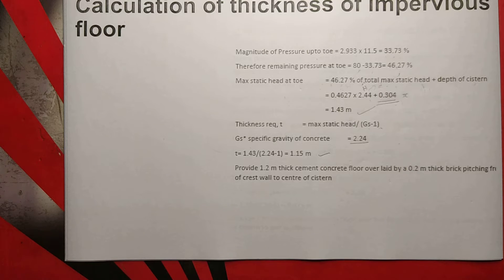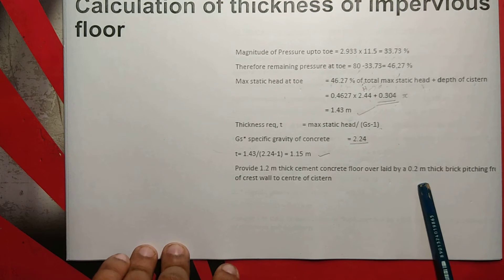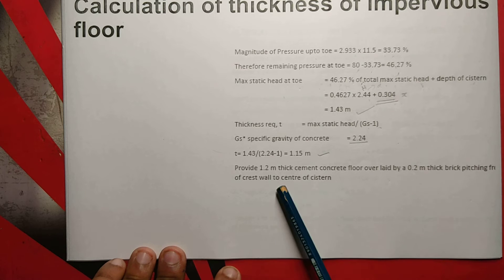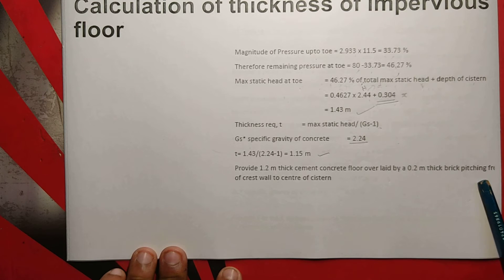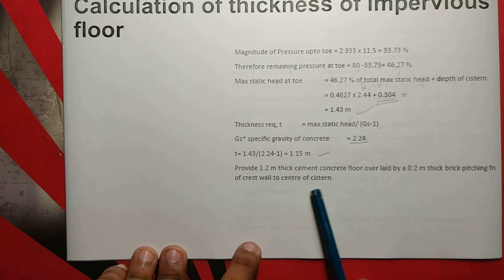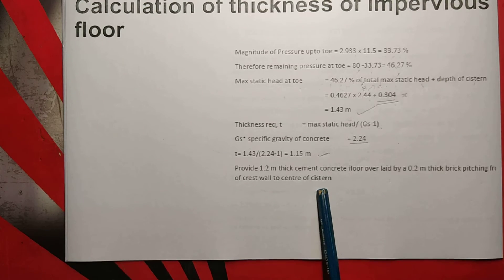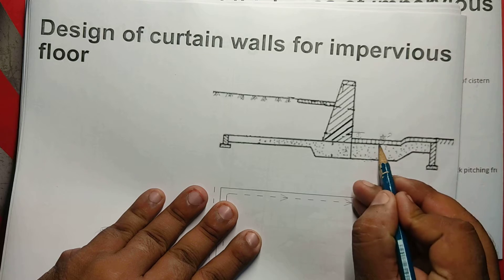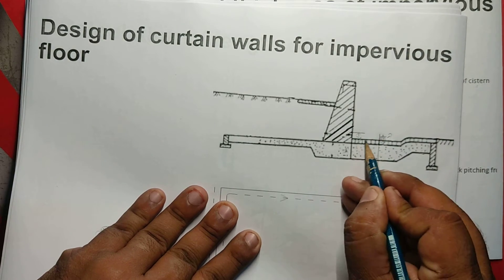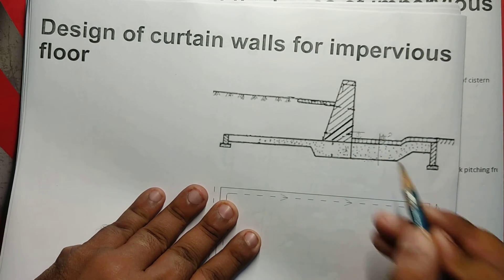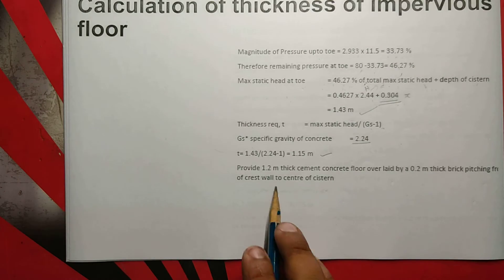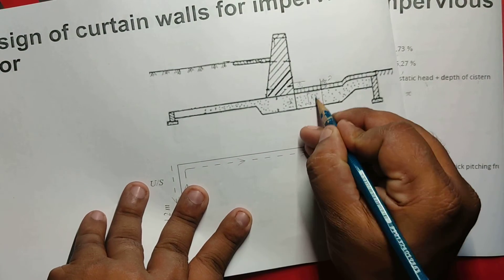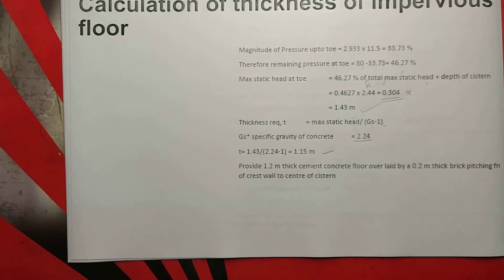Provide 1.2m thick cement concrete overlaid by a 0.2m thick brick pitching from the heel towards the center of the system. At least the bottom of the system is equal to 1.2m thick.